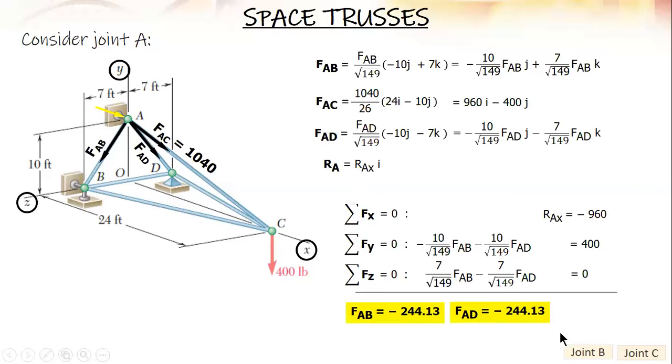Here are the results: The force of AB equals the force of member AD, both are compression, and RAX is negative 960.